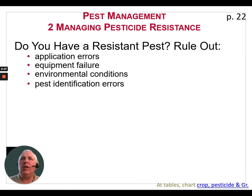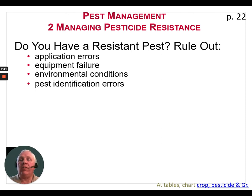Do you have a resistant pest? First, we need to rule out other problems that may have occurred, such as application errors — perhaps you didn't use the right rate of pesticide. Equipment failure is another possibility: your sprayer wasn't properly calibrated or had a pump starting to fail. It could also be environmental conditions — if you got rain before the rainfast period, the pesticide could have washed off the weeds before getting into the plant. Or it could simply be pest identification errors, since many weeds at the two- or three-leaf stage look very similar and are hard to identify.